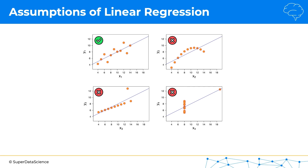These four datasets are called the Anscombe's Quartet, and they illustrate that you can't simply blindly apply a linear regression — you have to make sure that your dataset is fit for using linear regression. And that's where assumptions of linear regression come in. So let's have a look at them.